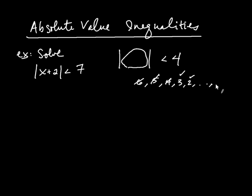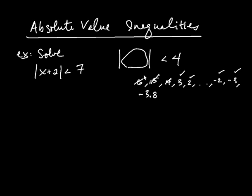Now, what happens if we get to, for example, negative 2? The absolute value of negative 2 is 2, and that's still less than 4. So we have a yes on negative 2. And what about negative 3? The absolute value of negative 3 is 3, again less than 4. How about negative 3.8? That's a yes again, because the absolute value of negative 3.8 is positive 3.8, which is less than 4. What about negative 4? It's a no, because the absolute value of negative 4 is 4, which is not less than 4.